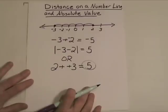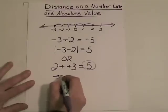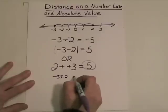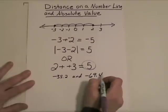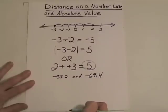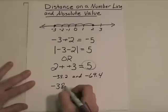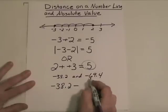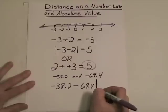For example, let's say I want to know how far apart are negative 38.2 and negative 69.4. I don't have to worry about which one's bigger or which one's smaller. All I have to do is put them into the absolute value bars and subtract them.